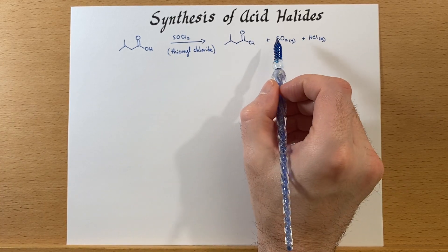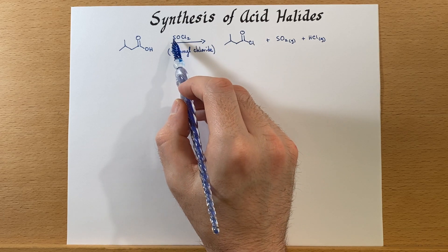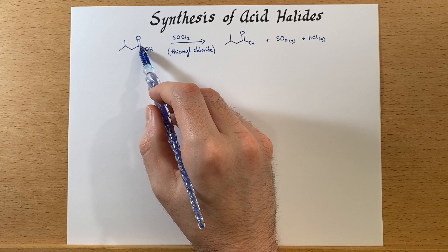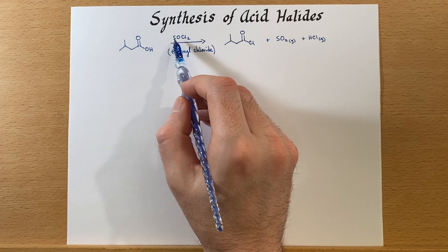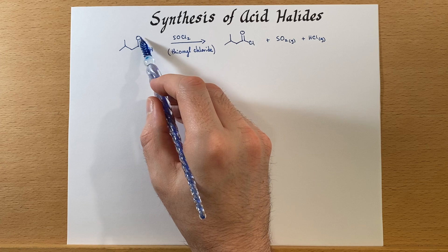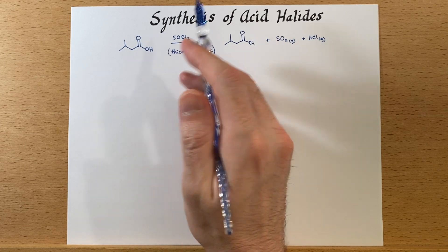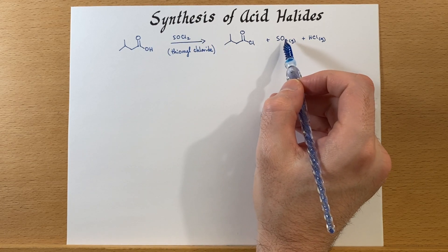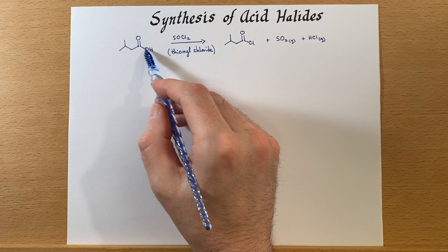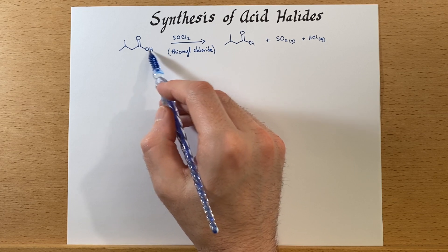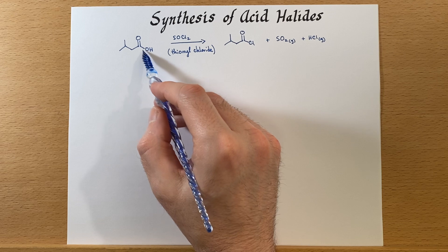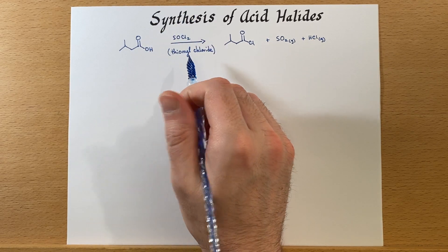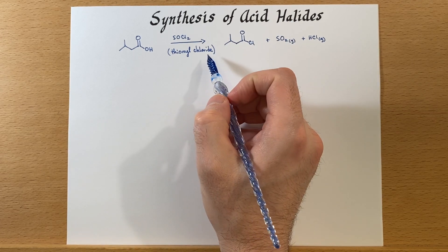Now how does this actually happen? There are quite a few steps. Thionyl chloride generates a Cl minus that will attack the carbonyl after it's been activated by the sulfur bonding to the oxygen. That's how the sulfur gets two oxygens on it — that's the SO2 — and effectively this oxygen here gets the second bond, and things move around from there.